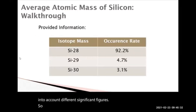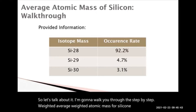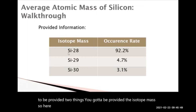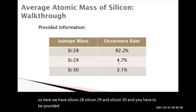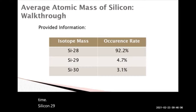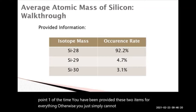So let's talk about it. I'm going to walk you through the step-by-step weighted average atomic mass for silicon. You have to be provided two things: the isotope mass — here we have silicon-28, silicon-29, and silicon-30 — and the occurrence rate. Silicon-28 occurs 92.2% of the time, silicon-29 occurs 4.7% of the time, and silicon-30 occurs 3.1% of the time. You must be provided these two items; otherwise you simply cannot do the weighted average for an atomic mass.